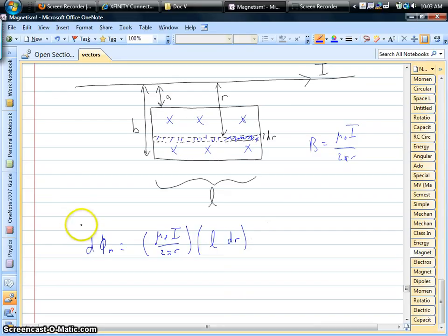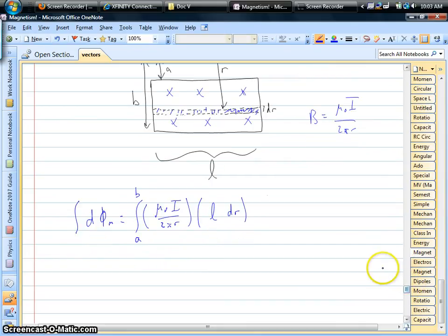So as always, if you want to get the total flux you have to add up all of these little fluxes. Now r is the variable. That's what changes from little slice to little slice of area. So again, according to our picture, we have limits on r going from the side closest to the wire to the far side. Adding up all those little fluxes to get the total flux.